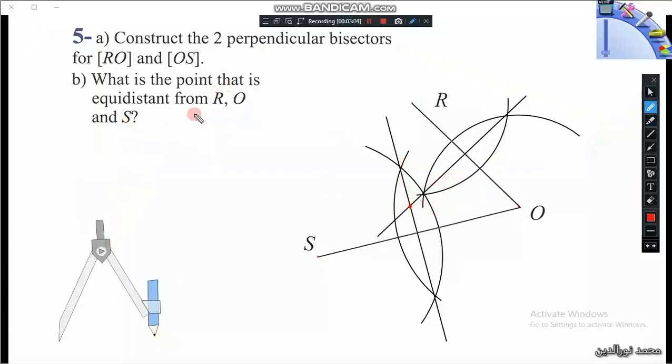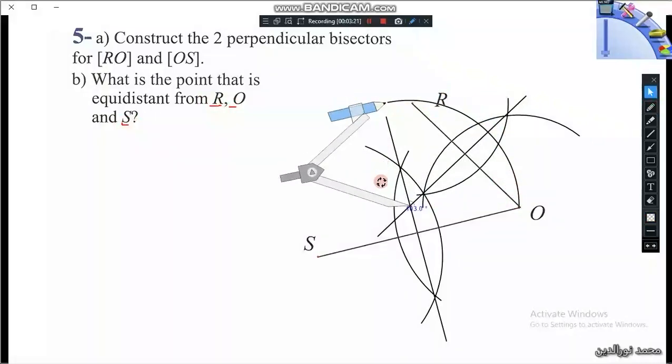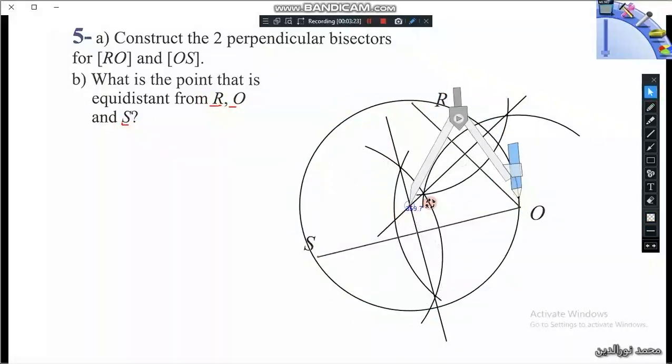And we could confirm that by drawing a circle having this point as a center, and it should pass through O, S, and R at the same time.